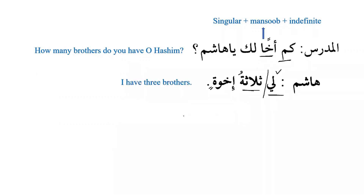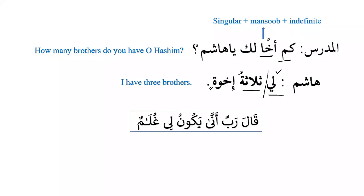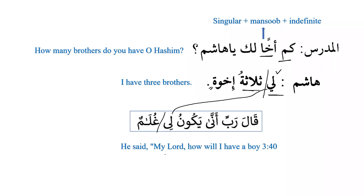I have three brothers. And from the Quran, the example: rabbi anna yakoonu li ghulam — My Lord, how will I have a boy? Whenever jar majroor comes before the subject, the noun that follows is generally indefinite — nakira.